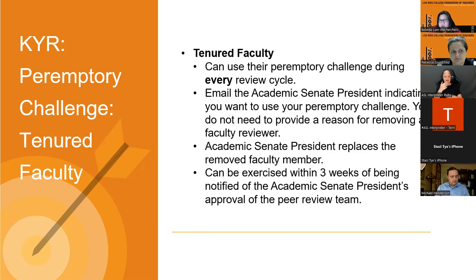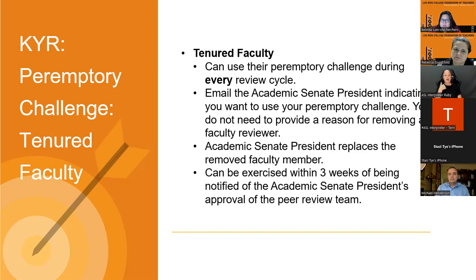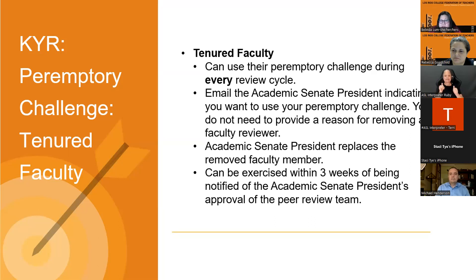For tenured faculty: after you receive tenure, you're reviewed every three years unless your committee recommends an off-cycle review or you are subject to a special review. The majority of tenured faculty undergo a Procedure A or B review. Your first post-tenure review is Procedure A — the full review with self-study, classroom observation, equity reflection, etc. Procedure B still requires the documents but no classroom observations. Tenured faculty can use their peremptory challenge during every review cycle, and it must be exercised within three weeks of notification of the senate president's approval.